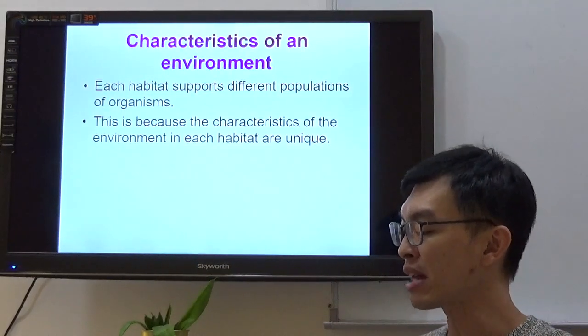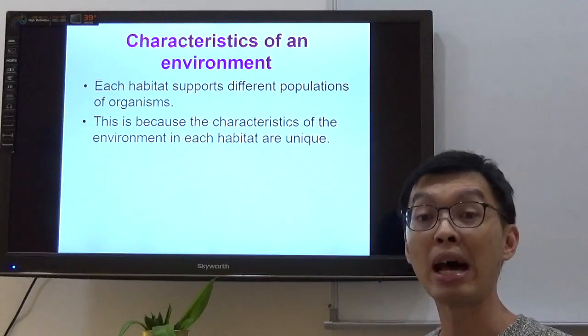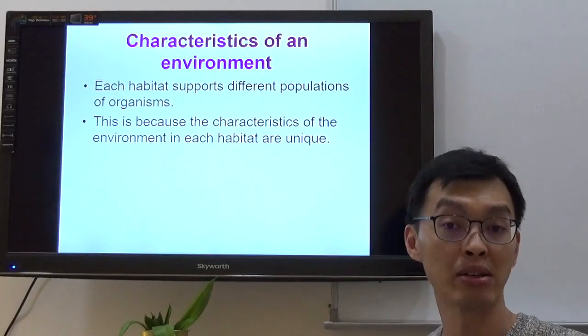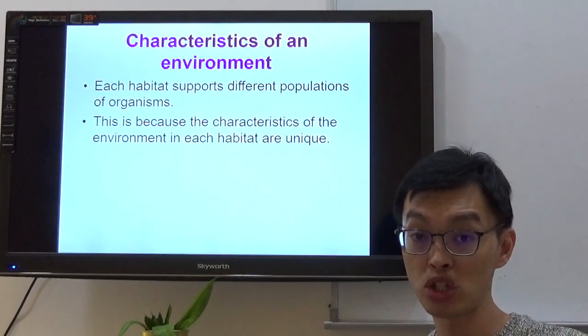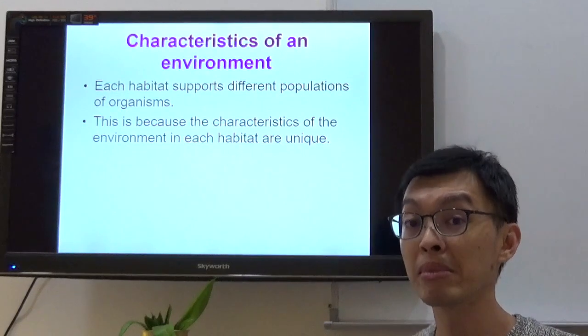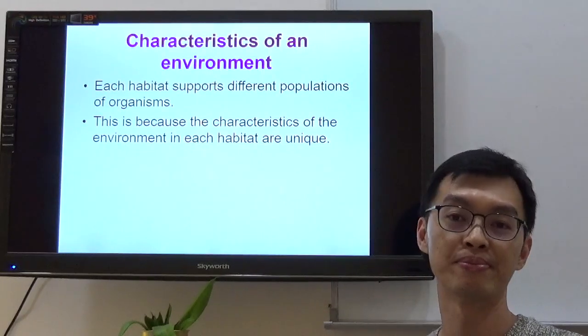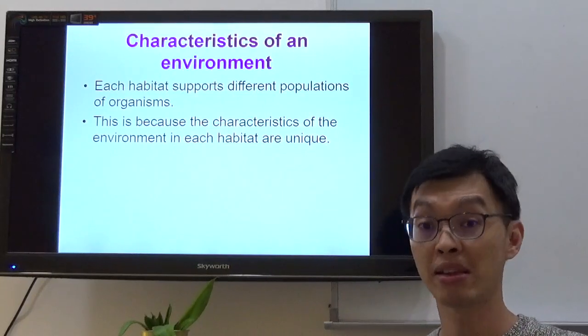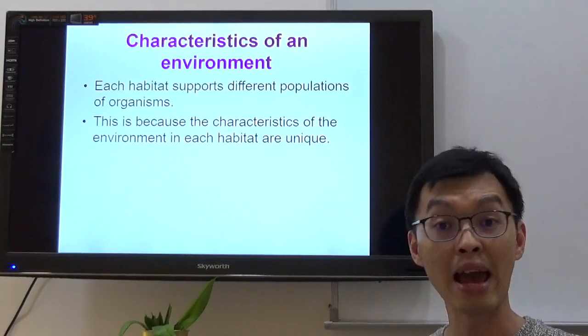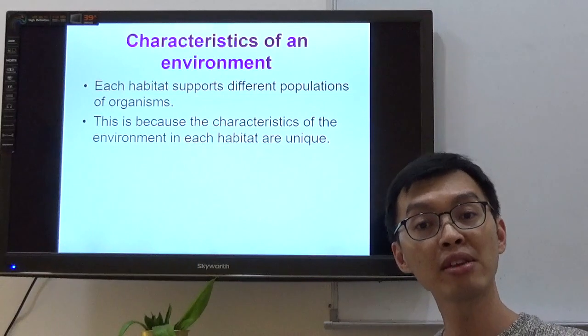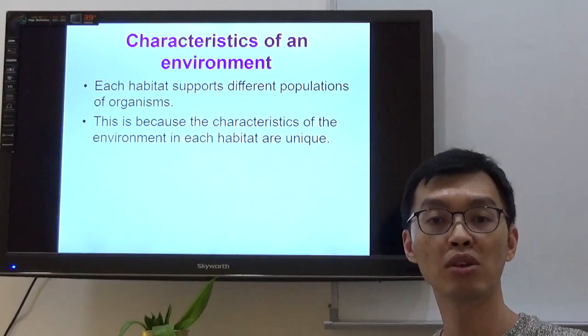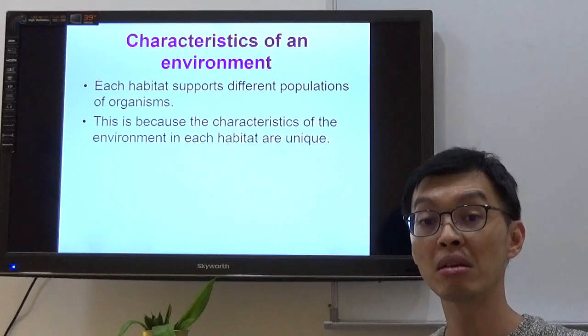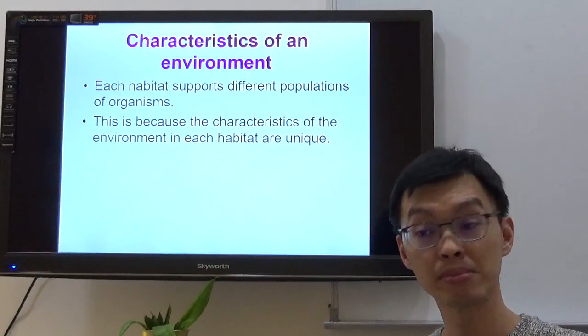This is because the characteristics of the environment in each habitat are unique. What do I mean by unique? Let's compare leaf litter habitats and a field habitat. Do you think the populations of organisms will be the same kind? I don't think so. In a leaf litter habitat, I give you some examples. Remember? Termites, wood lice, ants perhaps. But in a field habitat, very likely you will be finding, for example, zebras, or maybe some grasshoppers around.